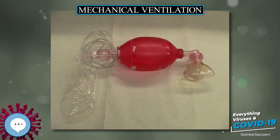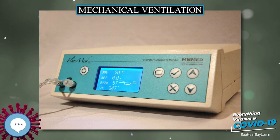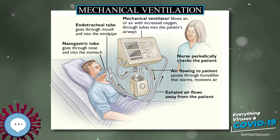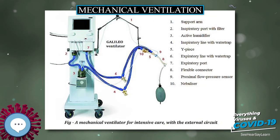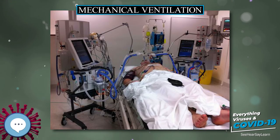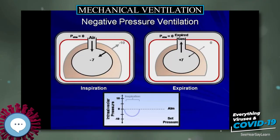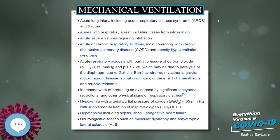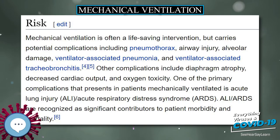The design of the modern positive pressure ventilators was based mainly on technical developments by the military during World War II to supply oxygen to fighter pilots at high altitude. Such ventilators replaced the iron lungs as safe endotracheal tubes with high-volume/low-pressure cuffs were developed. The popularity of positive pressure ventilators rose during the polio epidemic in the 1950s in Scandinavia and the United States. Positive pressure through manual supply of 50% oxygen through a tracheostomy tube led to a reduced mortality rate among patients with polio and respiratory paralysis. However, because of the sheer amount of manpower required, mechanical positive pressure ventilators became increasingly popular.